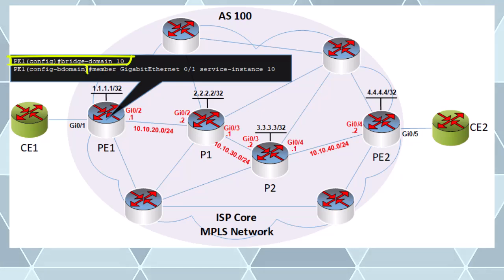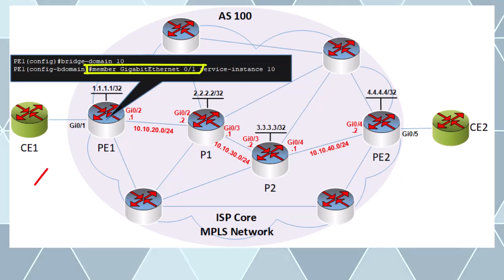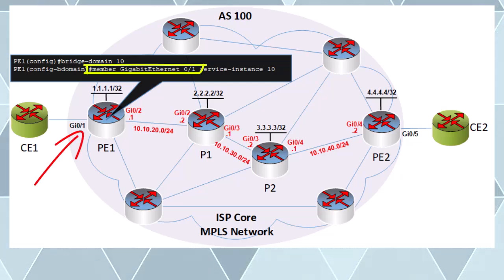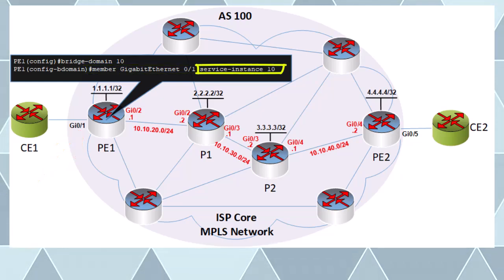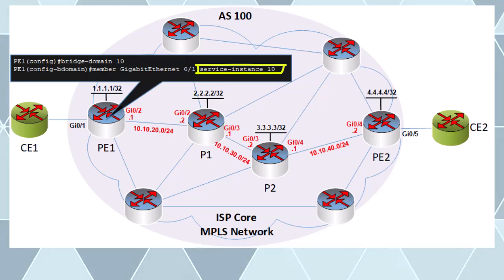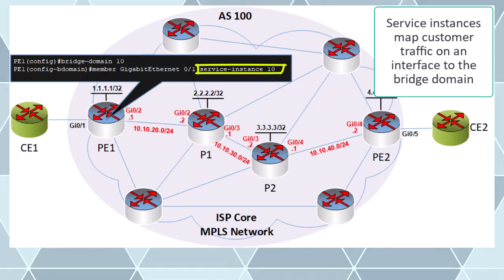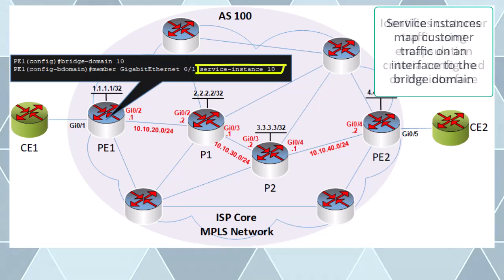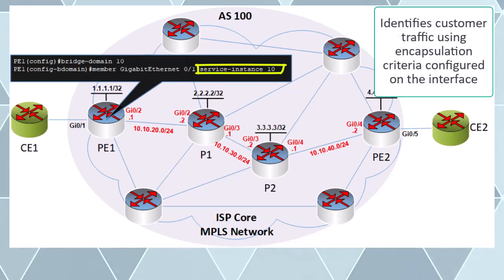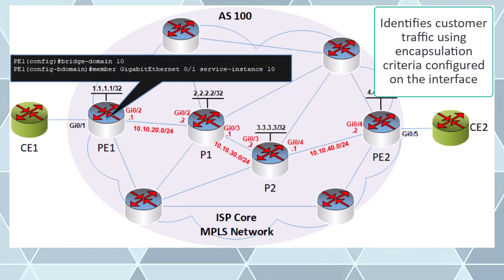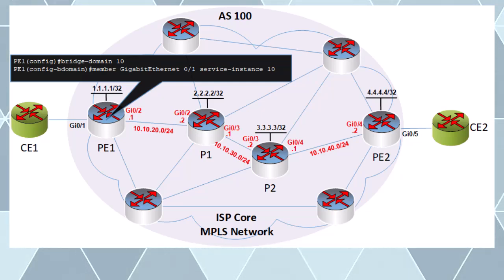I'll use a bridge domain ID value of 10. Under the bridge domain configuration we must specify which interfaces belong to that bridge domain. We specify the GigabitEthernet 0/1 interface which is the interface facing our customer. We also specify a service instance and a service instance ID. The service instance maps customer traffic on a specific interface to the bridge domain, identifying customer traffic using encapsulation criteria which we will configure on the interface itself.